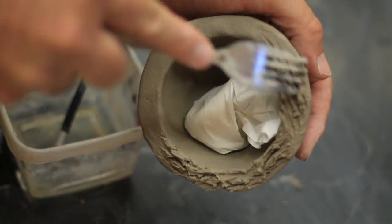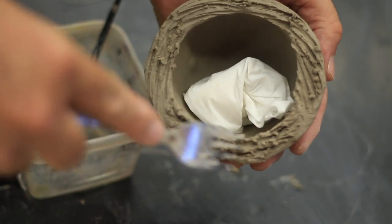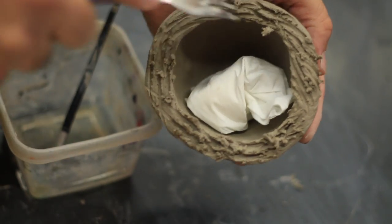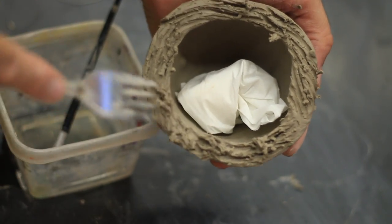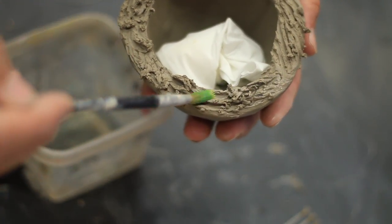Using a fork, aggressively and deeply score the rim of both pinch pots. Scoring too lightly will cause your pot to come apart later, so you really want to make sure that you dig in with either a fork or a needle tool to get it scored very well.